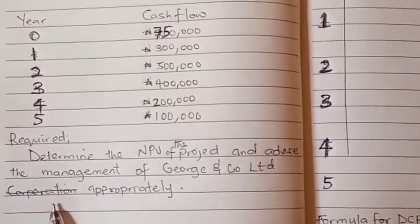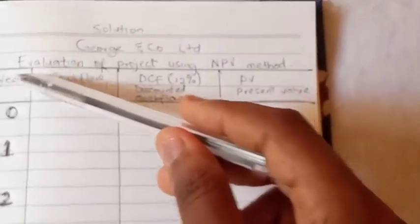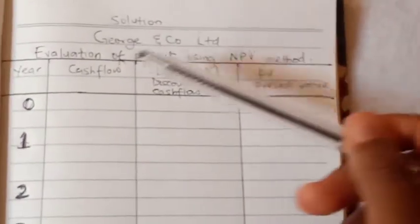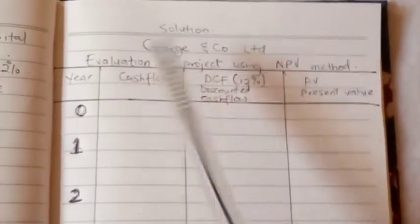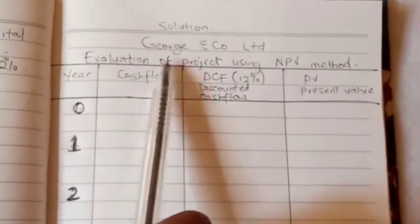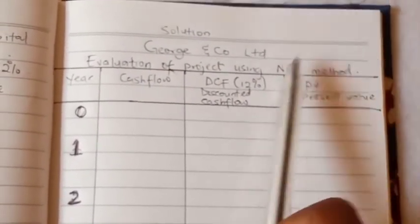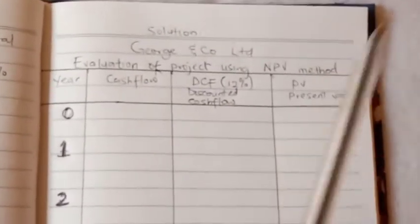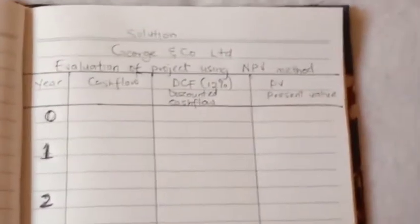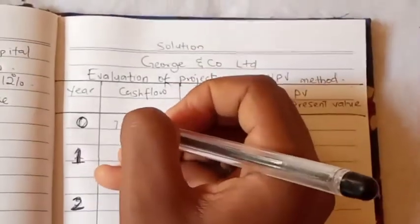You are required to determine the net present value of the project and advise the management of George and Co Ltd appropriately. So this is how to solve it. You first of all put down the heading which is the name of the company, then followed by evaluation of project using NPV method.